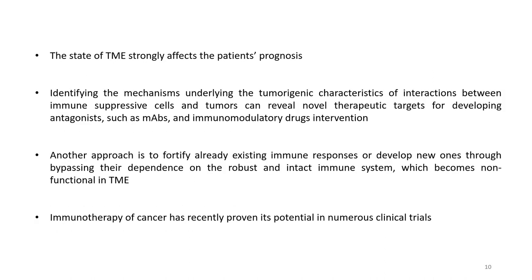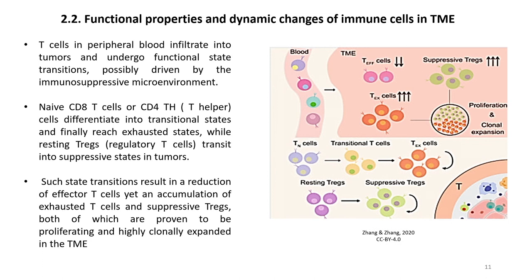In contrast, M2 macrophages and tumor-associated macrophages (TAMs) increase angiogenesis and formation of tumor-associated fibroblasts. These cells attenuate immune responses in the TME and increase tumor progression. The state of TME strongly affects the patient's prognosis; identifying the mechanisms underlying the tumorigenic characteristics of interactions between immunosuppressive cells and tumors can reveal novel therapeutic targets for developing antagonists such as monoclonal antibodies and immunomodulatory drug interventions.